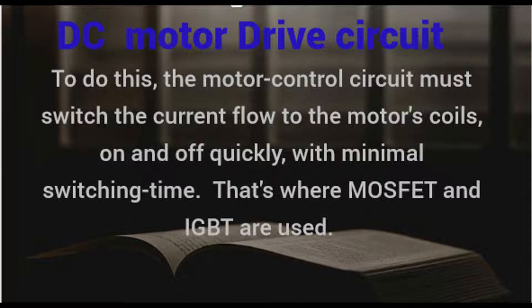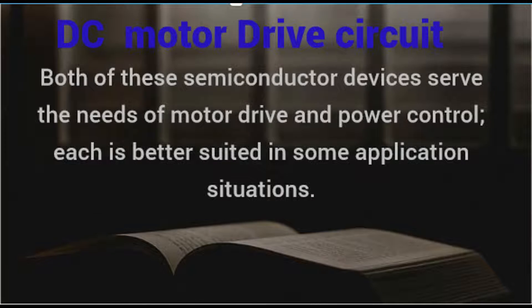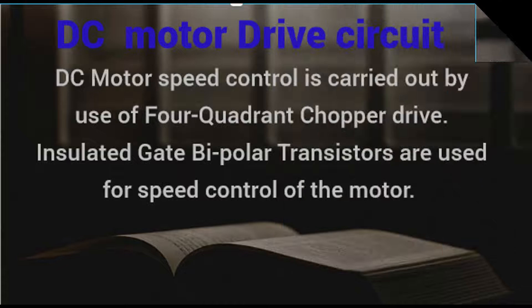That's where MOSFETs and IGBTs are used. Both of these semiconductor devices serve the needs of motor drive and power control, and each is better suited in some application situations. DC motor speed control is carried out by use of a four-quadrant chopper drive.